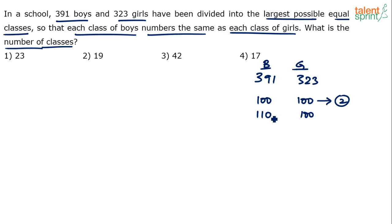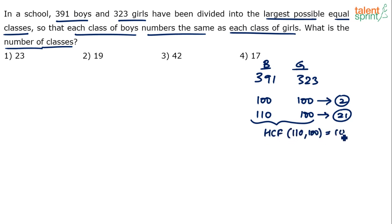We can divide them into sets of 10: 10 boys per class gives 11 classes, 10 girls per class gives 10 classes, total 21 classes. The number of students per class is simply the HCF of the given values. HCF of 110 and 100 is 10, so 10 students per class. Number of classes for boys: 110 ÷ 10 = 11; for girls: 100 ÷ 10 = 10; total: 21. In the 100/100 case, HCF(100, 100) = 100, giving just 2 classes.